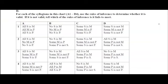Let's call it A1, in the upper left corner. You're supposed to tell me whether it's valid or invalid. And if it's invalid, which one of the rules of inference it fails to meet, which causes it to be invalid.